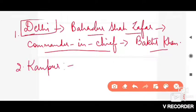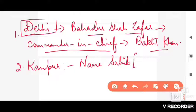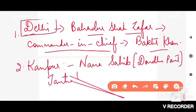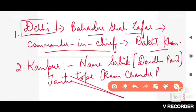From Kanpur, it was Nana Sahib, who was the adopted son of Peshwa Baji Rao. His real name was Dhondu Pant. With him was Tantia Tope, whose real name was Ram Chandra Pandurang.